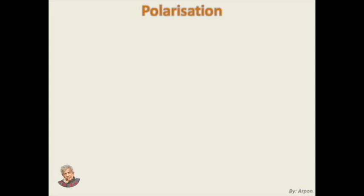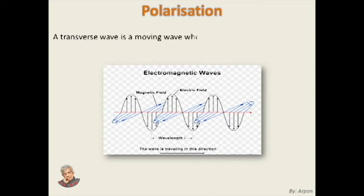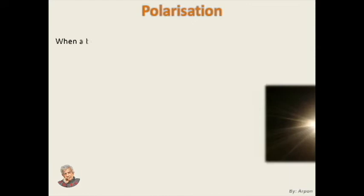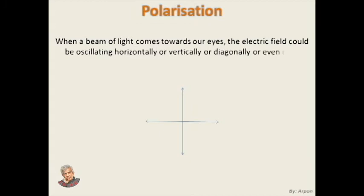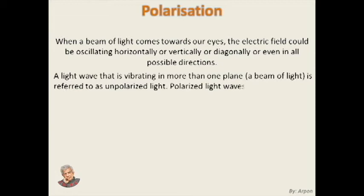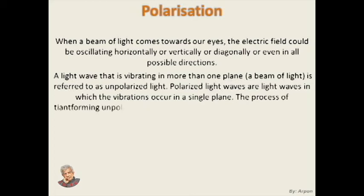Light is an electromagnetic wave as well as a transverse wave. A transverse wave is a moving wave whose oscillations or vibrations are perpendicular to the direction of the wave. In the picture, the oscillations of the magnetic field and electric field of the electromagnetic wave are perpendicular to its direction. When a beam of light comes towards our eyes, the electric field could be oscillating horizontally, vertically, diagonally, or in all possible directions. A light wave that is vibrating in more than one plane is referred to as unpolarized light.